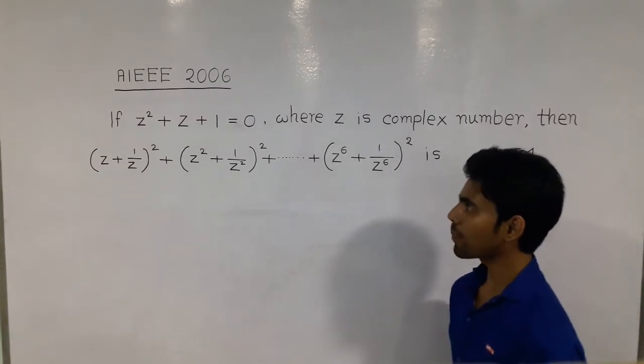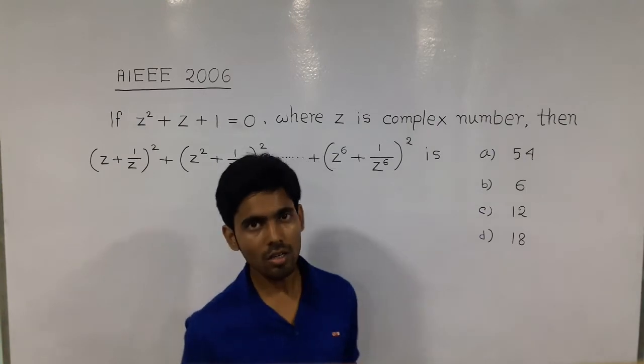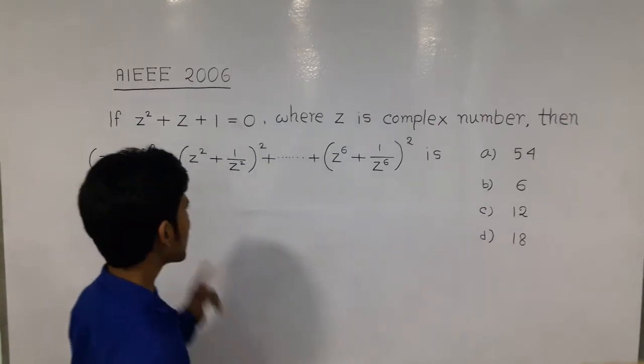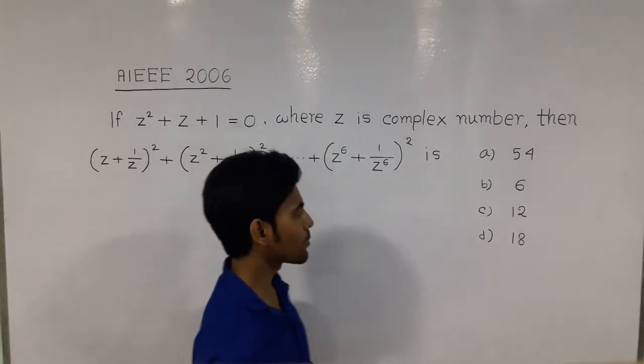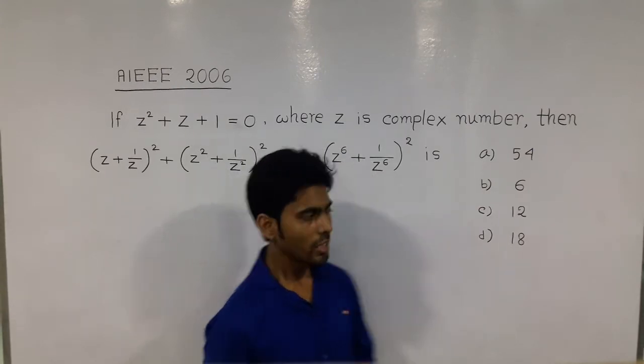Today's problem is if Z² + Z + 1 = 0, where Z is a complex number, then the expansion is option A: 54, option B: 6, option C: 12, and option D: 18.